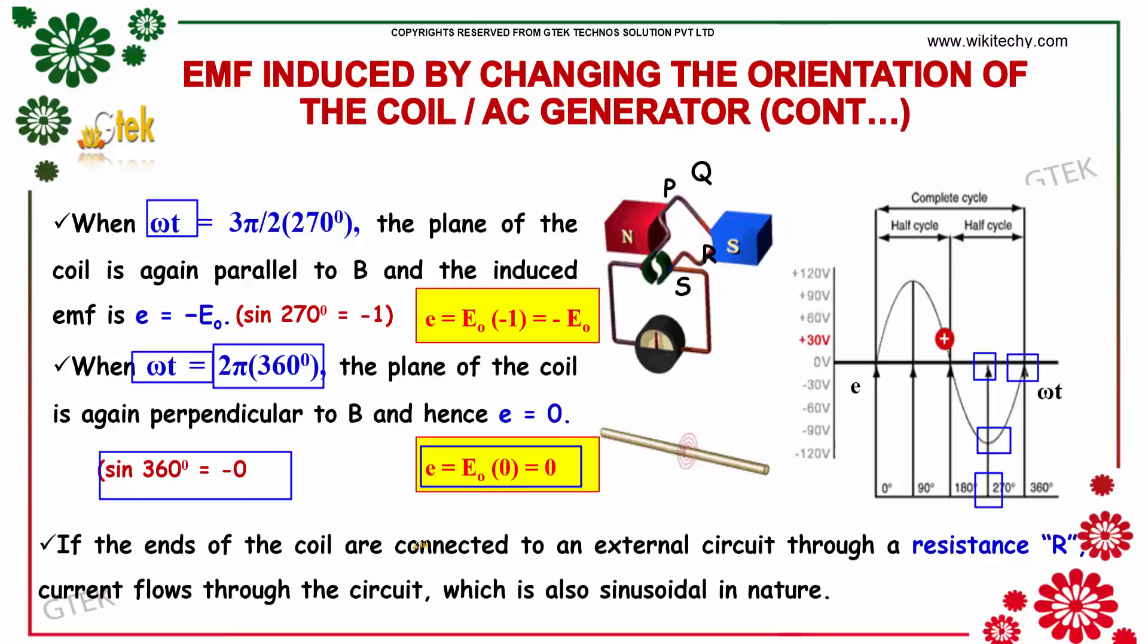If the ends of the coil are connected to an external circuit through a resistance R, the current flows through the circuit which is also sinusoidal in nature.